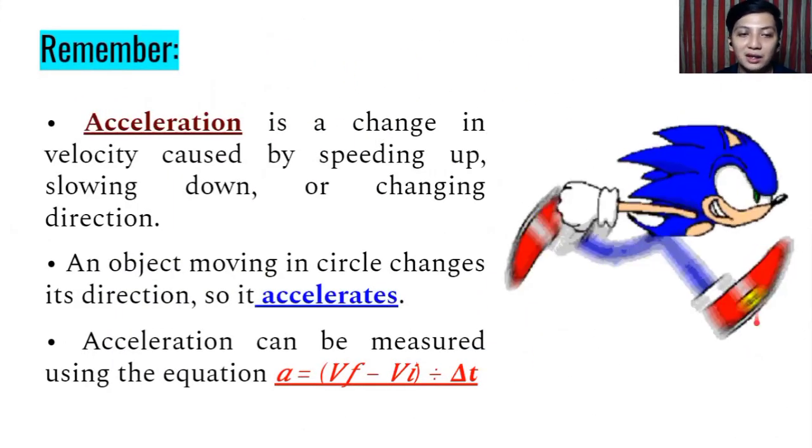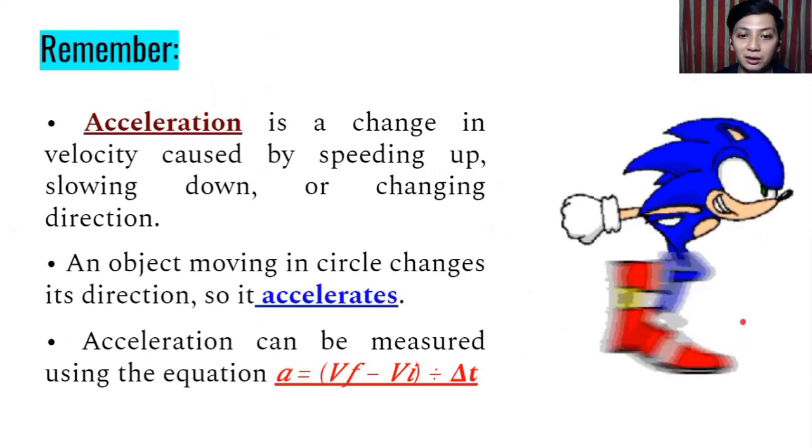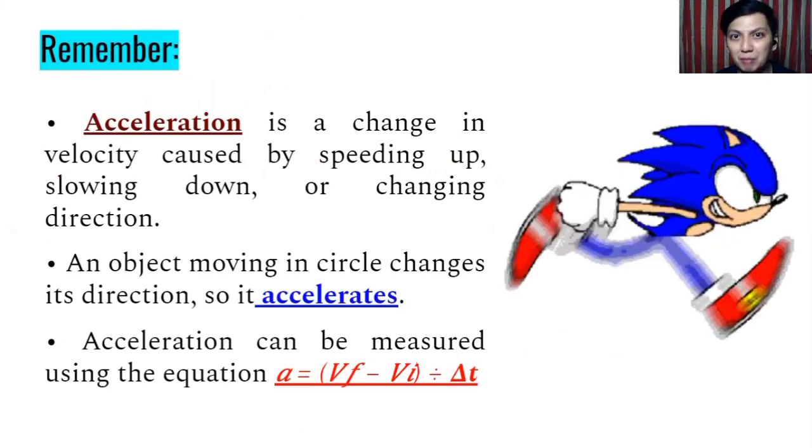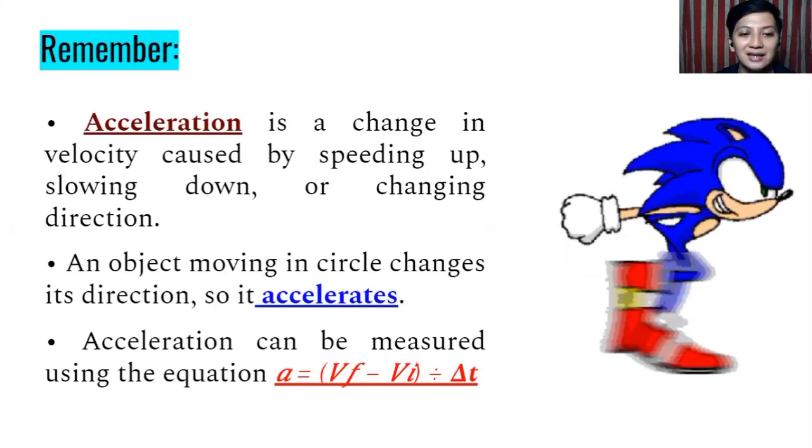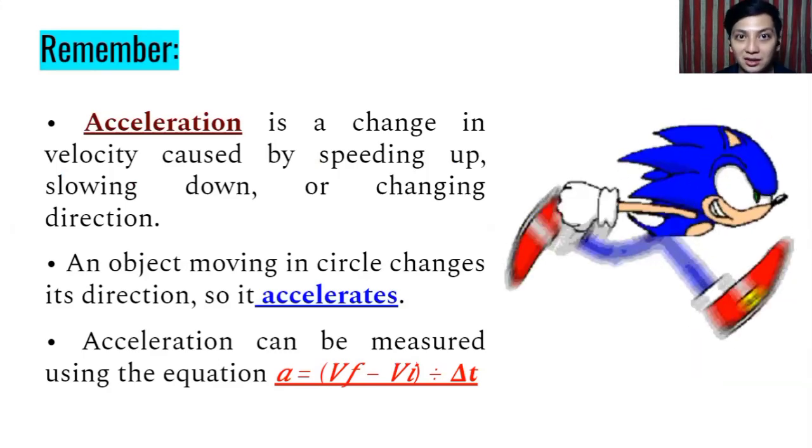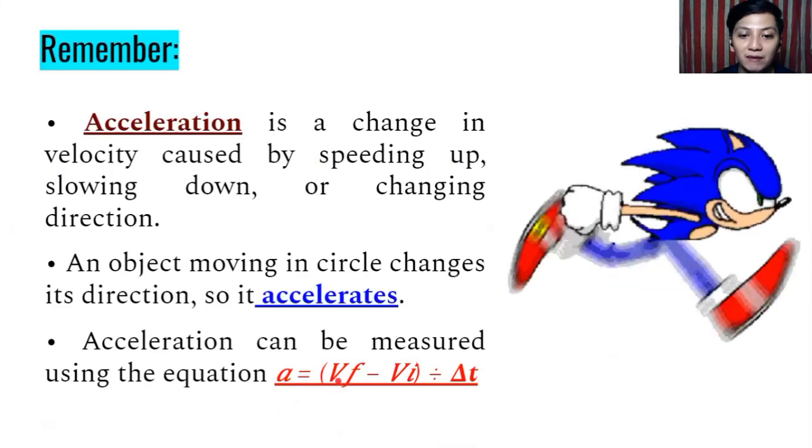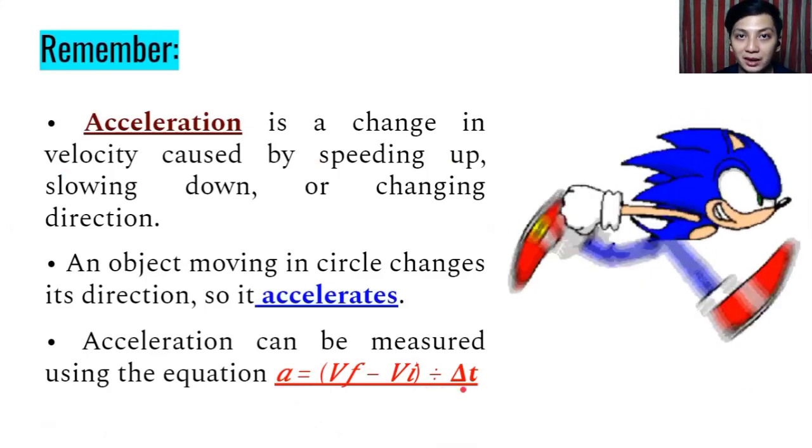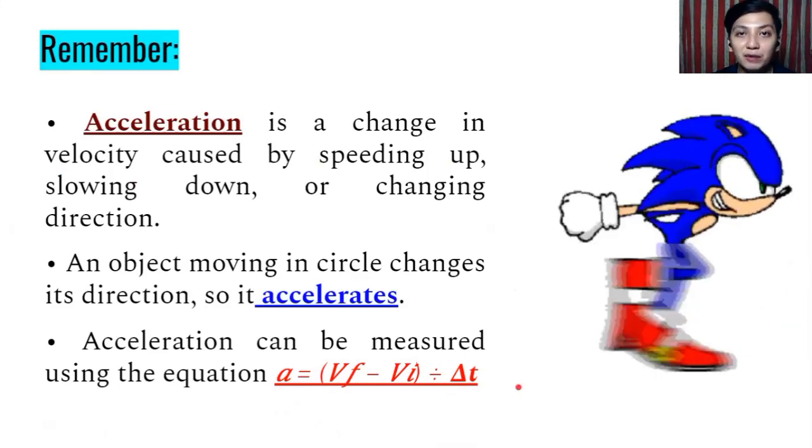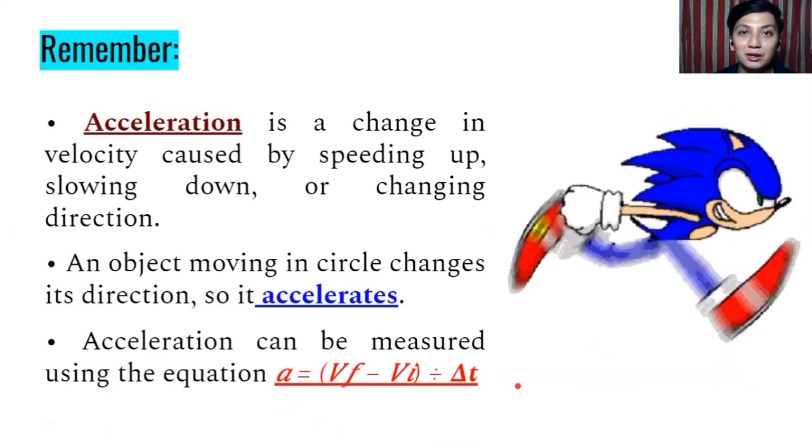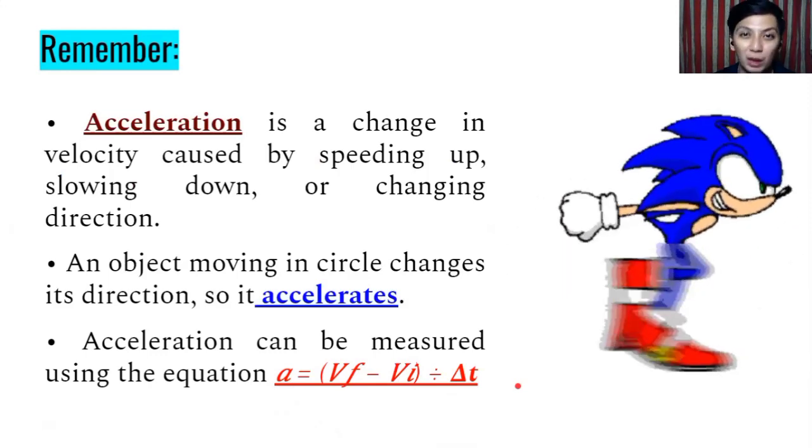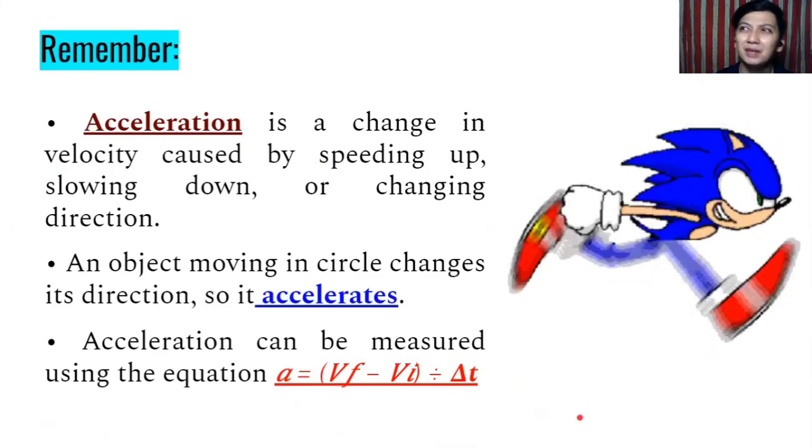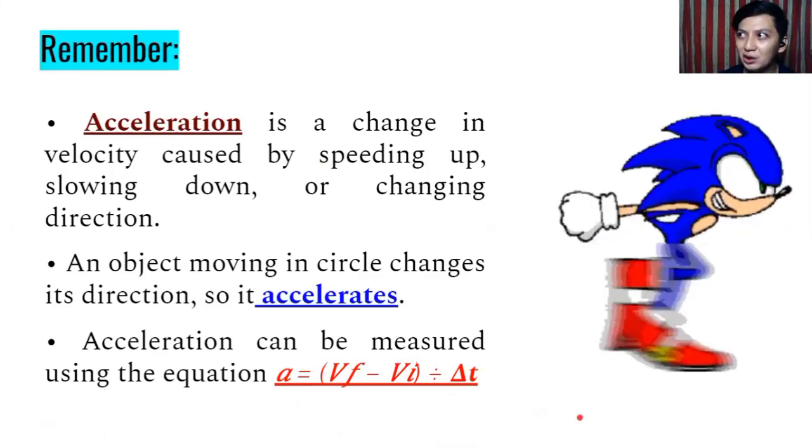Remember, acceleration is the change in velocity caused by speeding up, slowing down, or changing direction. An object moving in a circle changes its direction, so it accelerates. Acceleration can be measured using the equation: a = (V_f - V_i) / t. Do not forget that the unit for acceleration is meters per second squared or kilometers per hour squared.